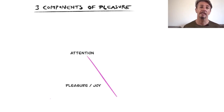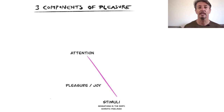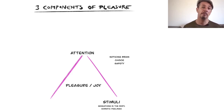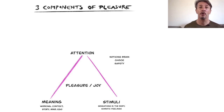The second component is the stimuli you are sensing, such as the experience in your skin — whether it is warm, soft, rough, etc. The third component is the meaning, or the story, or context related to the stimuli.